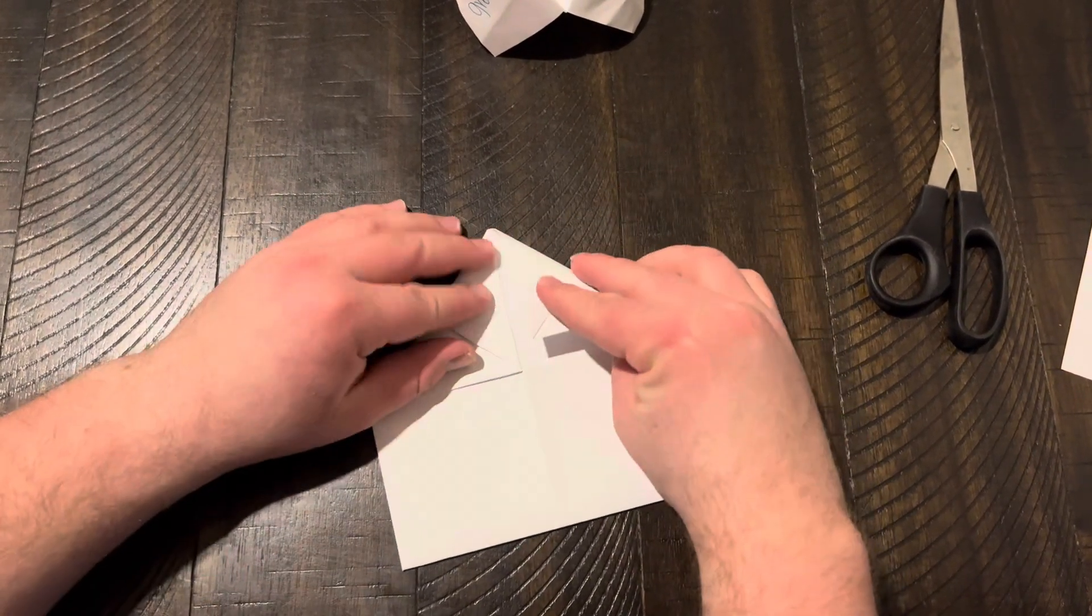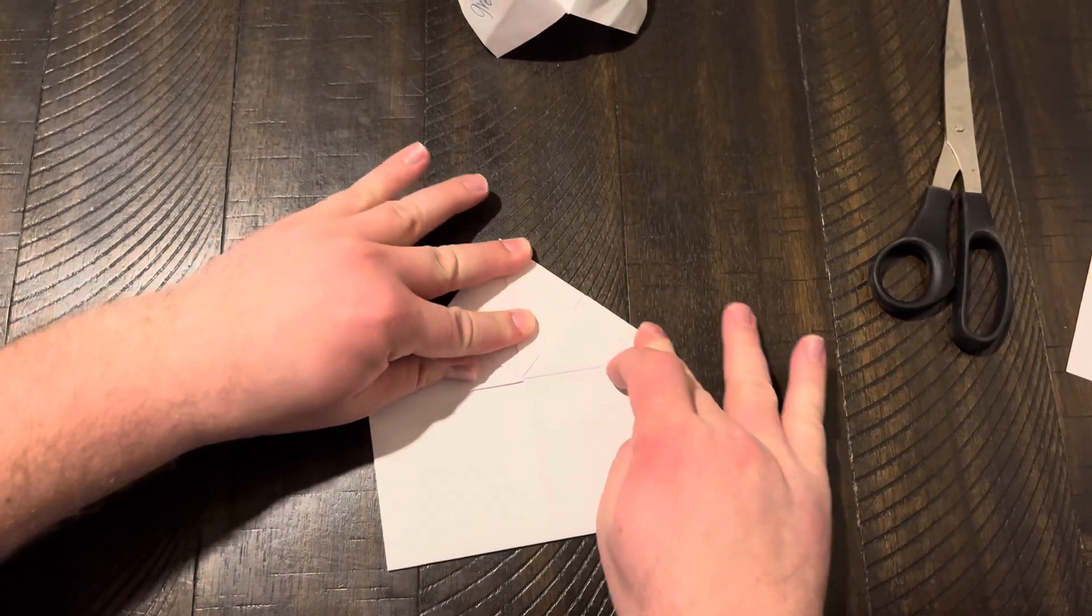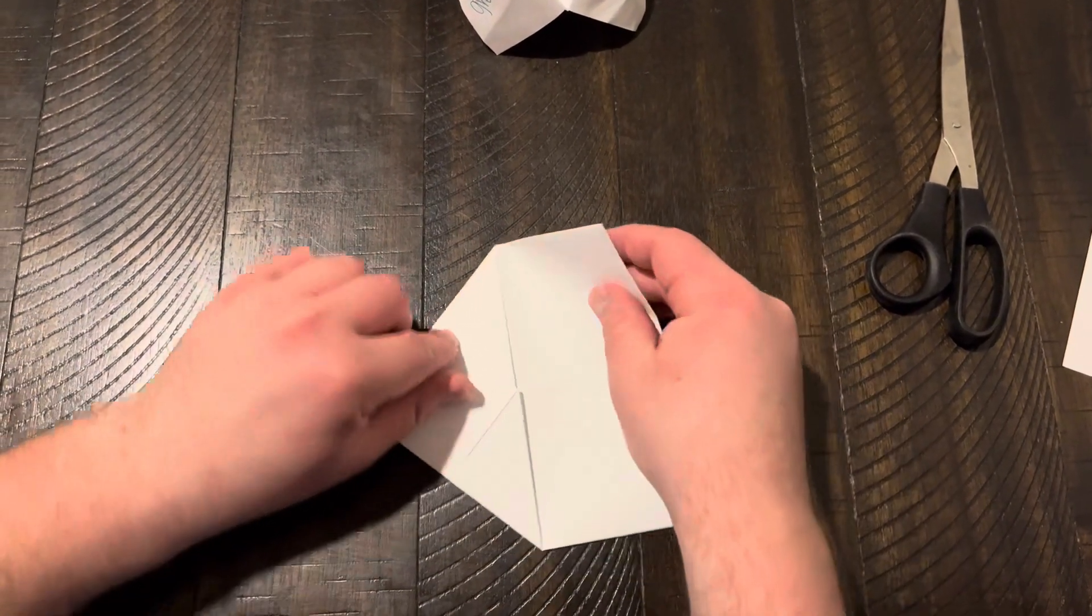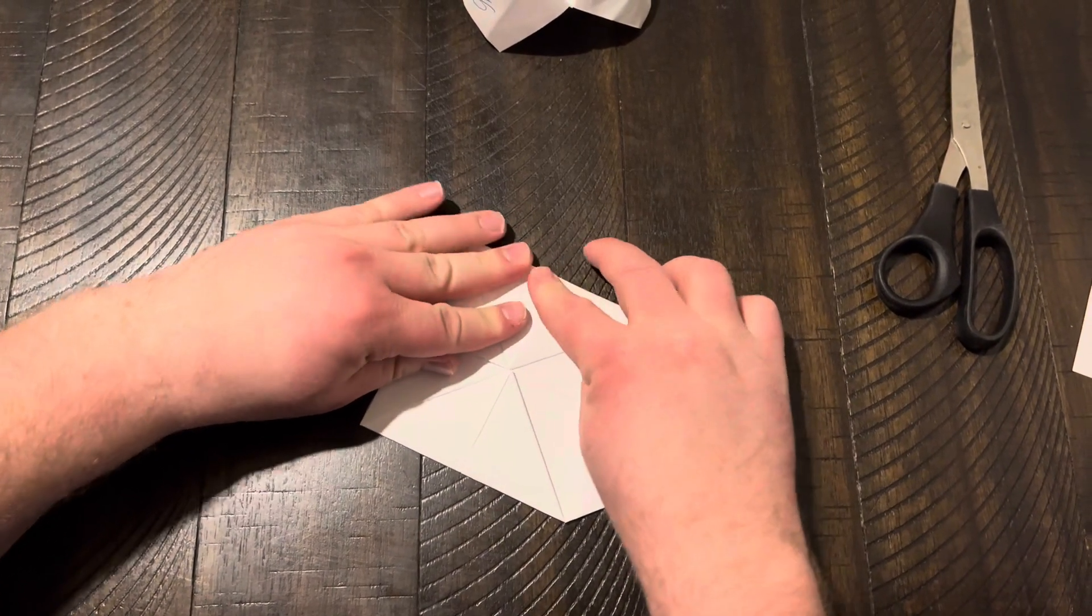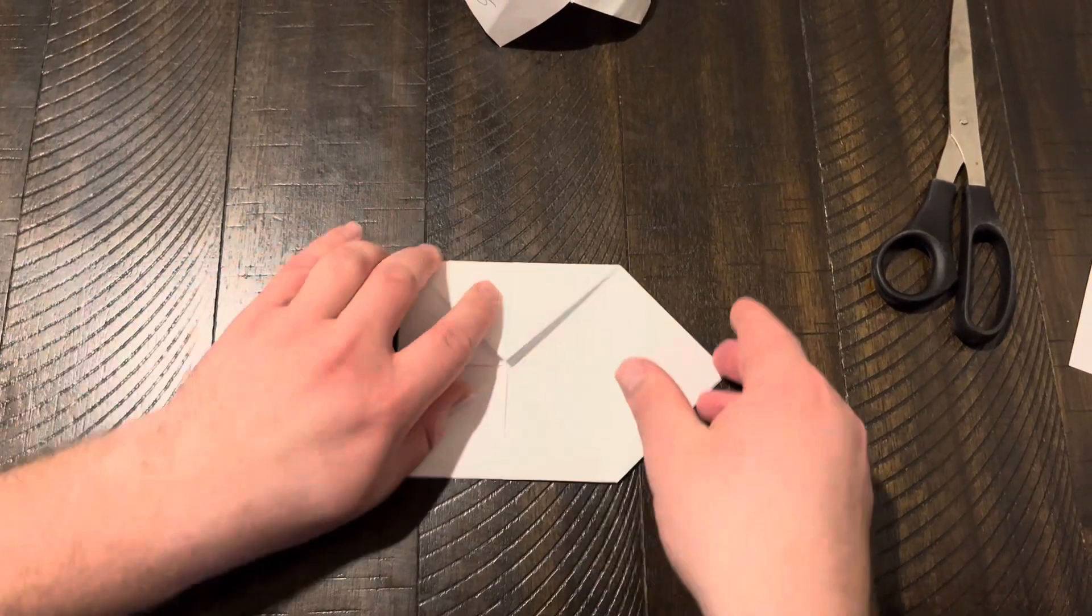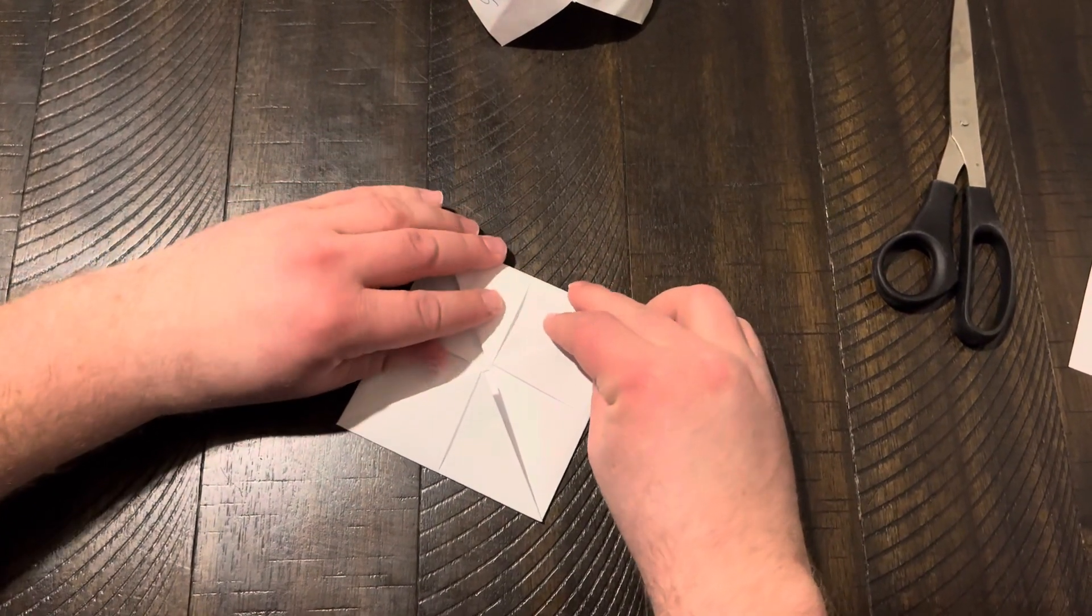Crease it nice and good. Take this corner, bring it to the middle. Just like that. This corner, we follow the George Strait song and meet in the middle. And then we do it with the last corner right here.